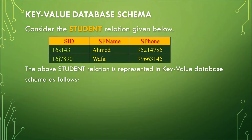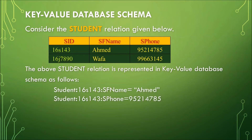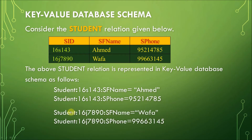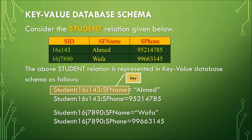The student relation is represented in key-value database schema as follows. This would be the new structure in a key-value database schema. These two entries here come from the first record, and the next two are based on the second record for Wafa. The first part of this schema is the key, and the next part is the value — thus, key-value database.